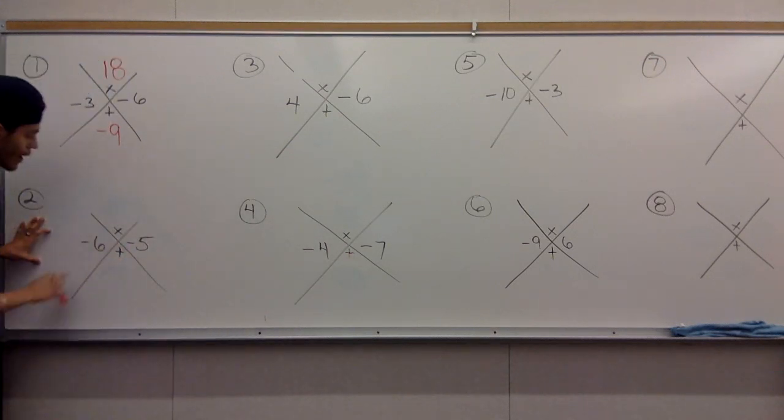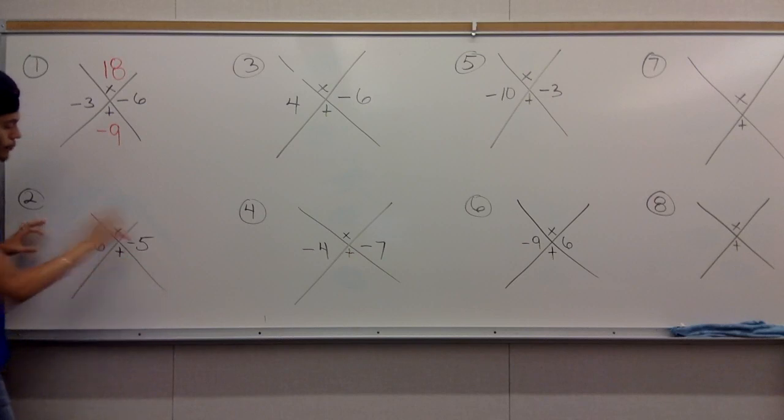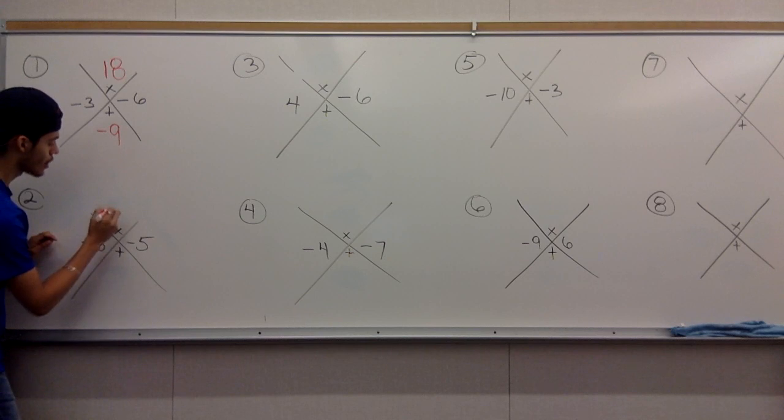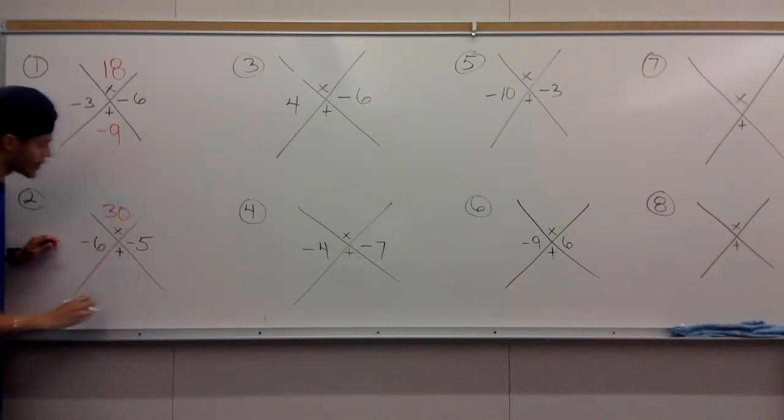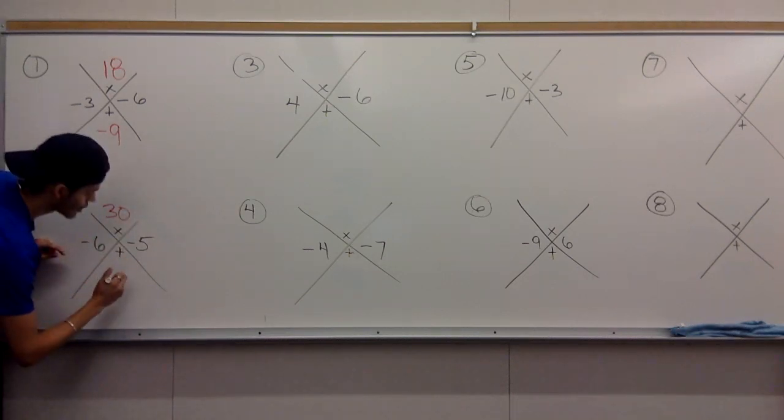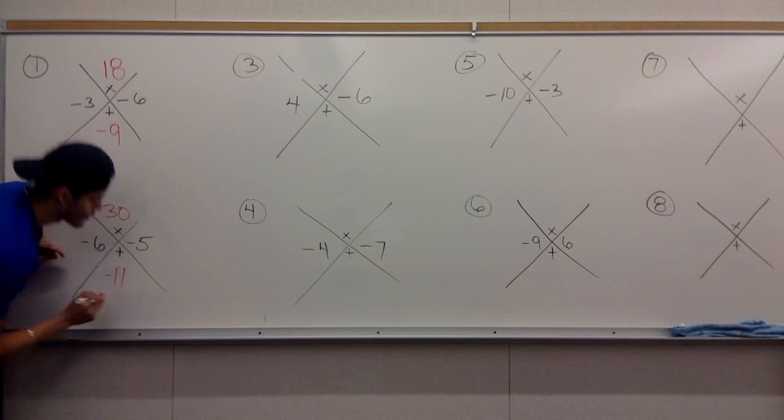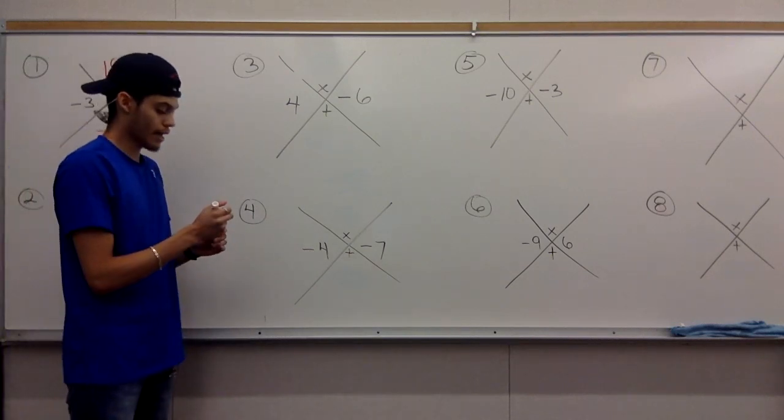So here at number two, we have negative six and negative five. Multiply them together. We have two negatives. The two negatives make a positive and I'm going to give you the answer of 30. Adding them together, negative six plus negative five would give you the answer of negative 11. Alright, hope you guys are getting this down.